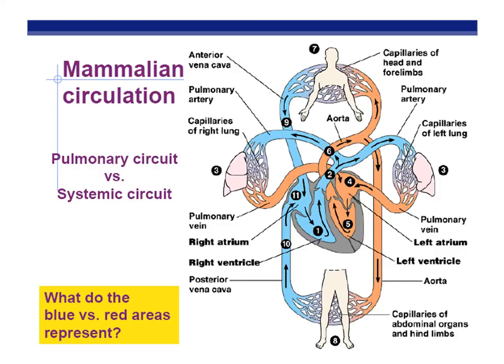Pause and take this one step at a time through the pulmonary circuit and the systemic circuit — two circuits. This ends part two of your notes on Chapter 42, Animal Circulation.